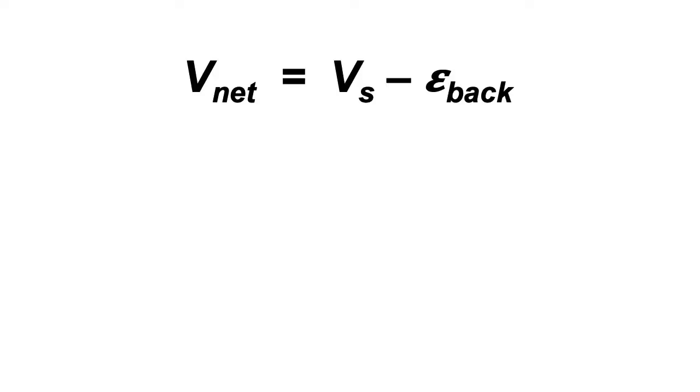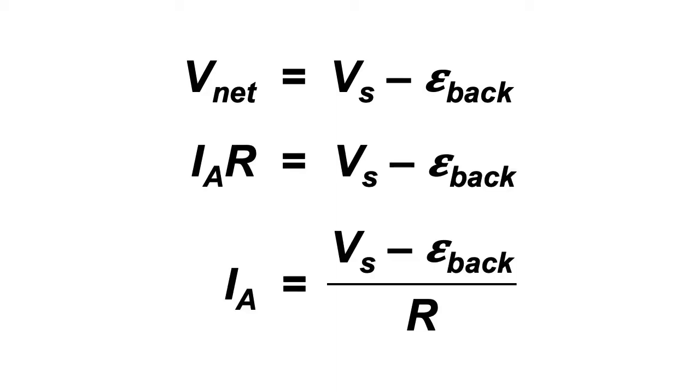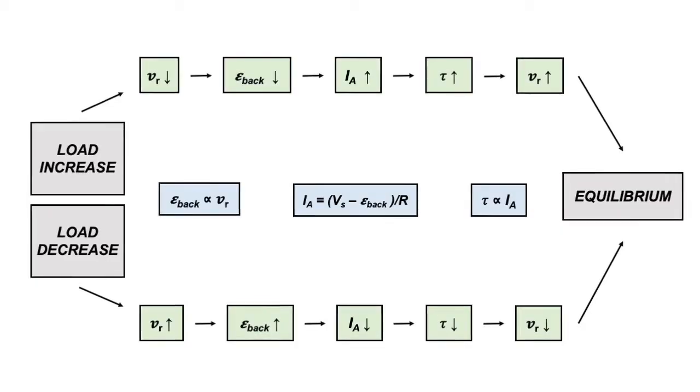The current to the armature can be quantitatively found through I is equal to V supply minus E back over the resistance of the motor. Back EMF and operating current become very significant in the working of a DC motor, as it allows the motor to become self-regulating. This essentially means that it allows the motor to draw just enough current to produce the torque required specific for that load.